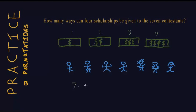How many ways can someone get scholarship 2? There are six people. How many people can get scholarship 3? There are five people left. How many people can get scholarship 4? There are four people.